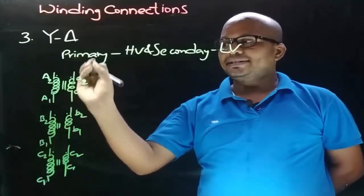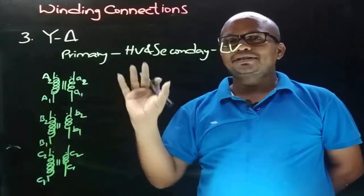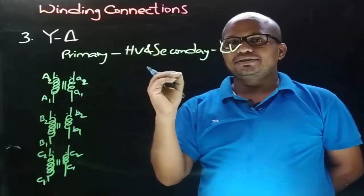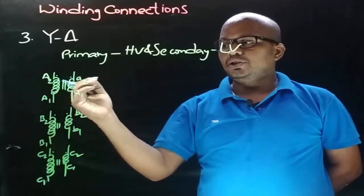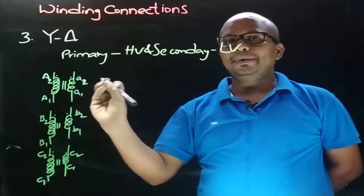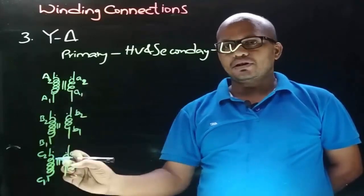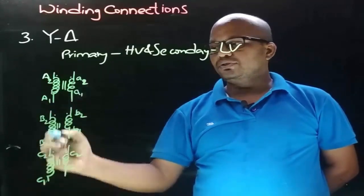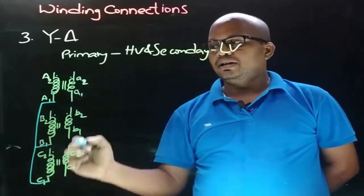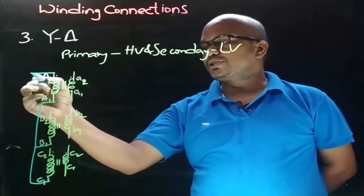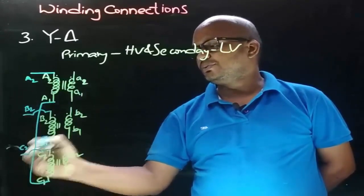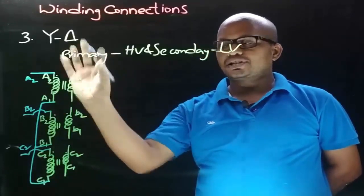First let's obtain the star connection on the primary side. To obtain the star connection on the primary side we must join the common end terminals and take the connections from the other ends. The common ends could be dot ends or non-dot ends. Here let's consider the non-dot ends as the common end terminals, which are A1, B1, and C1. So join A1 to B1 and then to C1, and take connections from dot ends A2, B2, and C2. We obtain the star connection on the primary side.